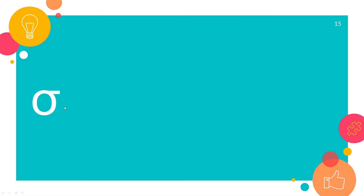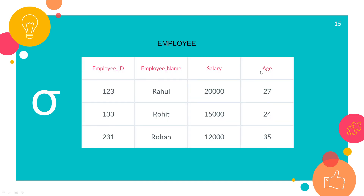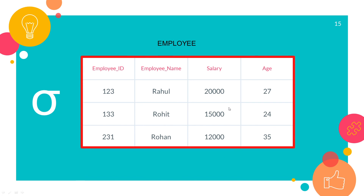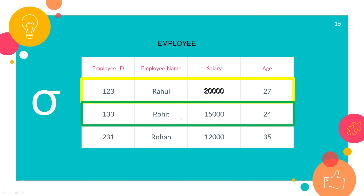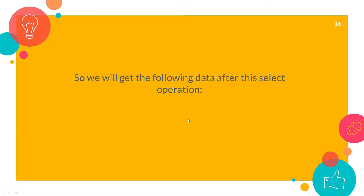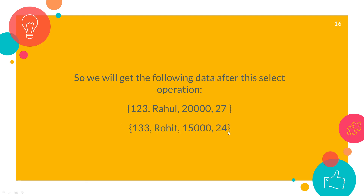So how will it look in table format? We apply the select operator on the entire employee table, giving us all the columns. Now, the first condition was salary greater than 15,000 — Rahul is the only one who satisfies this condition. The second condition is age less than 25 — Rohit also satisfies that condition. So we have two rows that satisfy one or the other condition. After the select operation we will get: first row — 123, Rahul, 20000, 27; and the second row — 133, Rohit, 15000, 24. This is the data we get after the select operation.